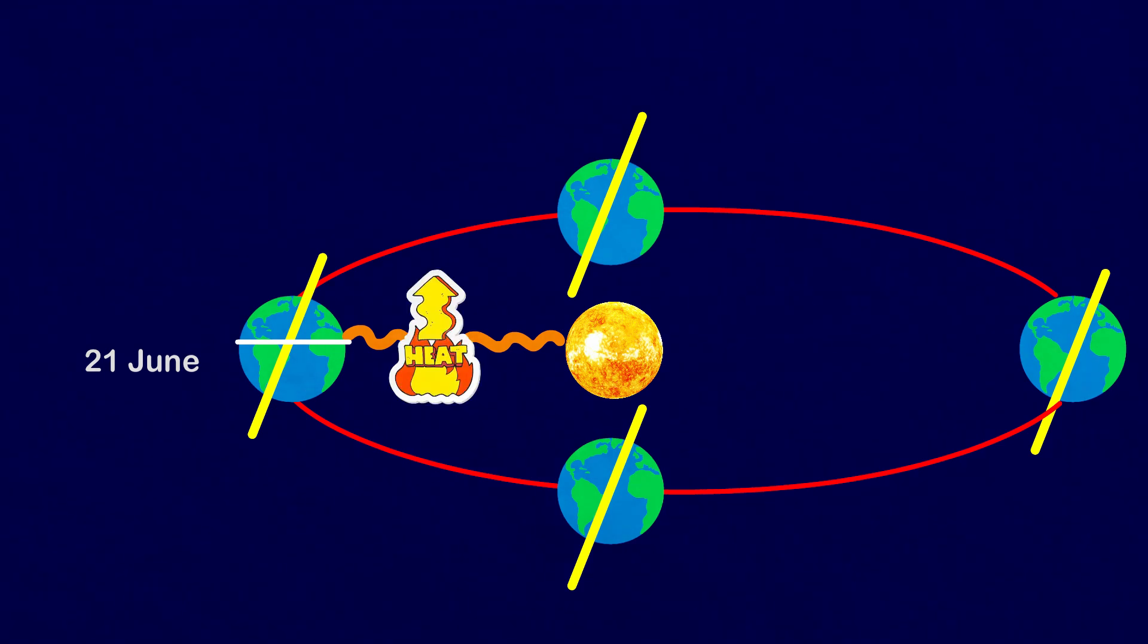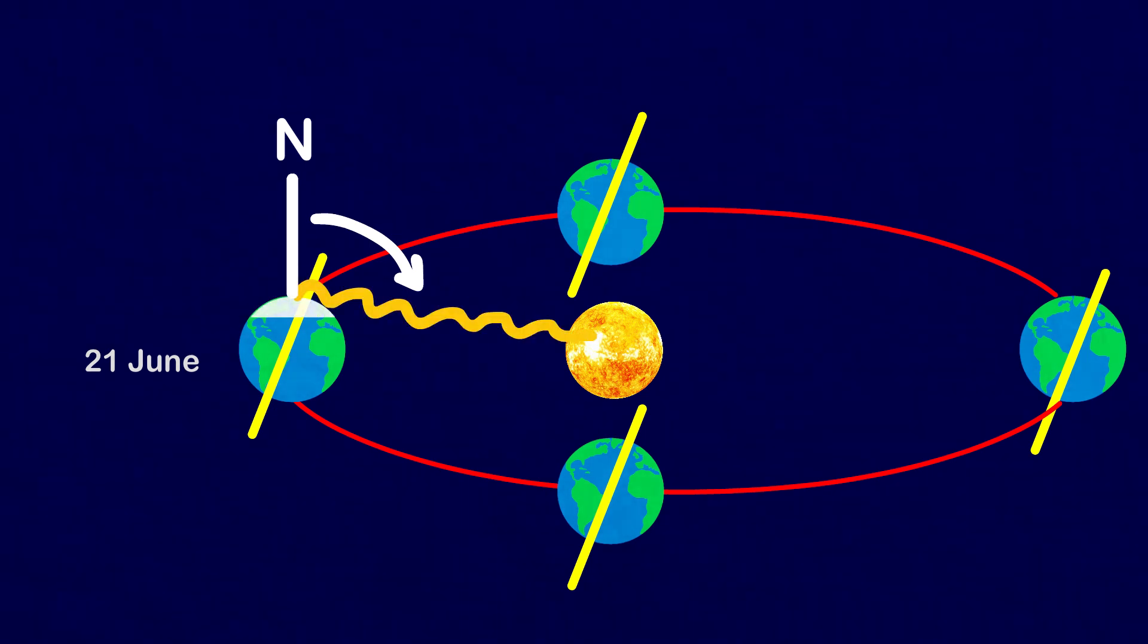The rays of the sun fall directly on the Tropic of Cancer. As a result, these areas receive more heat. The areas near the poles receive less heat as the rays of the sun are slanting. The north pole is inclined towards the sun and the places beyond the Arctic Circle experience continuous daylight for about six months.